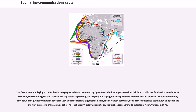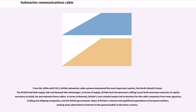The first attempt at laying a transatlantic telegraph cable was promoted by Cyrus Westfield, who persuaded British industrialists to fund and lay one in 1858. However, the technology of the day was not capable of supporting the project; it was plagued with problems from the outset and was in operation for only a month. Subsequent attempts in 1865 and 1866 with the world's largest steamship, the SS Great Eastern, used a more advanced technology and produced the first successful transatlantic cable. Great Eastern later went on to lay the first cable reaching to India from Aden, Yemen, in 1870.